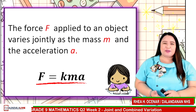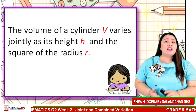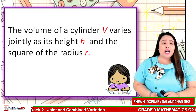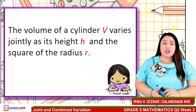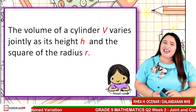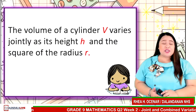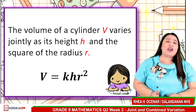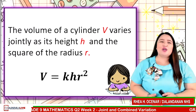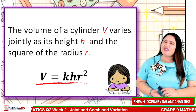You're doing great. How about this one? The volume of a cylinder V varies jointly as its height H and the square of the radius R. Key in your answer. The correct answer is V is equal to kHR squared. Did you get it correctly? Magnificent! You are now ready for the next level.